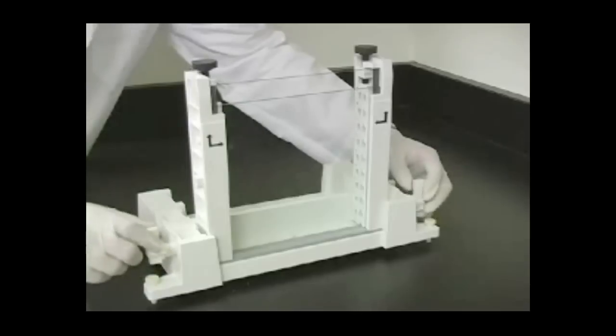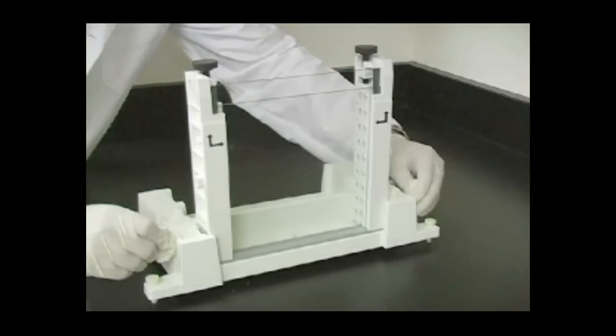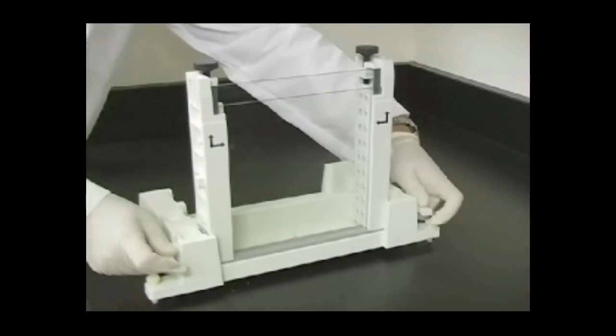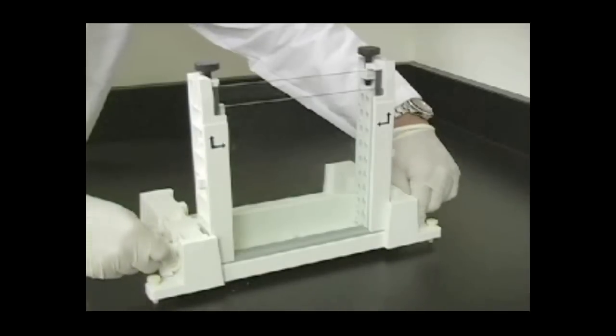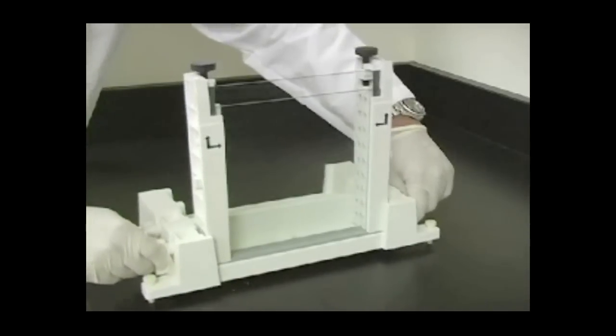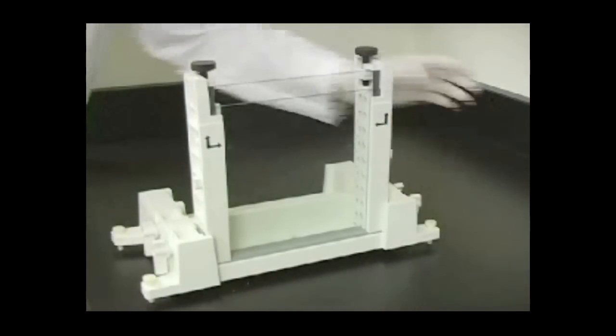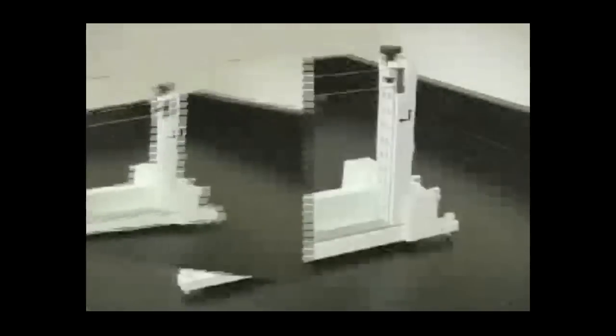Orient the handles of the cams upward, push the cams in, and turn them 180 degrees so that the handles of the cams point downward. You should feel some resistance. The sandwich should now be tightly secured in the casting stand.